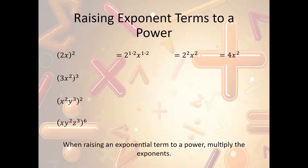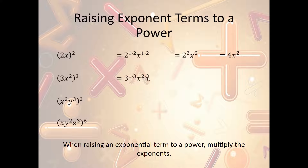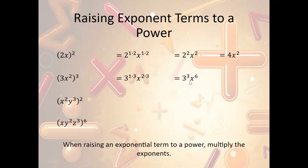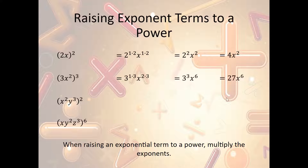Let's look at another example: (3x²)³. This is 3 to the first and x squared. We multiply each by the outside power of 3 — so 3¹ times 3 is 3³, and x² times 3 is x⁶. We know 3³ is 27, so we get 27x⁶.